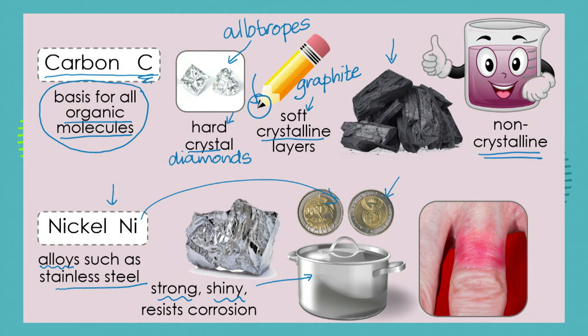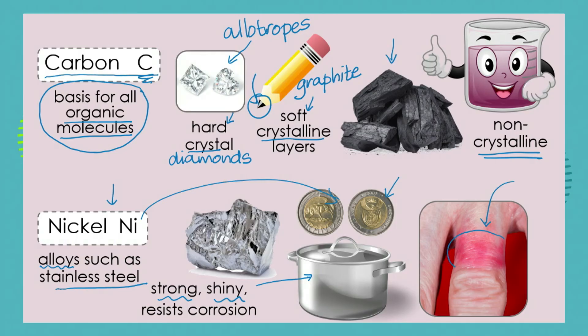Nickel has a downside as well. Sometimes nickel is used to plate over other metals to make cheaper jewellery, but nickel can be an irritant and make us feel allergic to that metal. So if you have a ring or a necklace that starts to make you itch, you know that it's got nickel in it, because humans can be allergic to nickel.